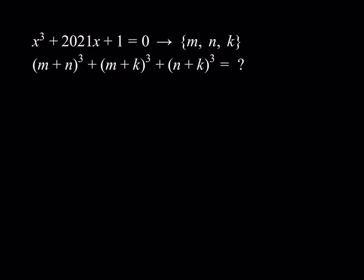In this cubic equation, we're supposed to calculate this expression. Obviously there's a formula for m plus n quantity cubed — you can expand it and so on. But I'm going to do it a little differently, and I'm going to present two solution methods here. Let's get started.